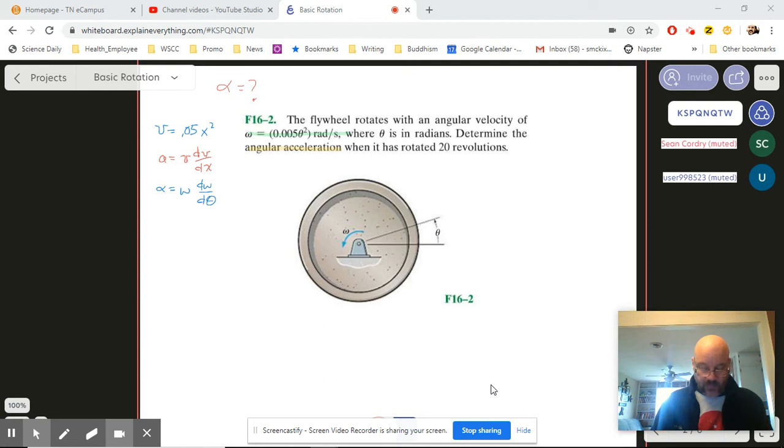So d(omega)/d(theta) looks like—I bring the two down—we have 0.01 theta. And of course we've got omega. So when we get ready to do alpha, we just put those things together. Alpha becomes omega, which is 0.05 theta squared...